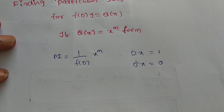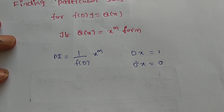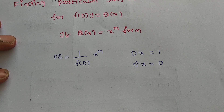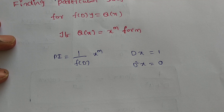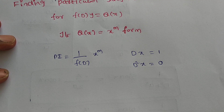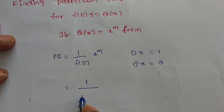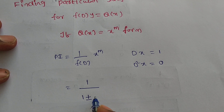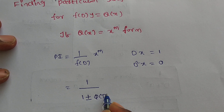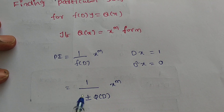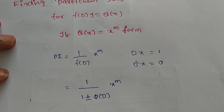In previous cases, when Q(x) was a constant we set D=0, when it was e^(ax) we set D=a, and for sin(x) or cos(x) we replaced D² with -a². But in this case we cannot replace D values directly. So instead, we must write f(D) in the form 1 + φ(D) or 1 - φ(D).